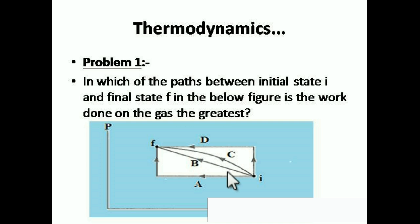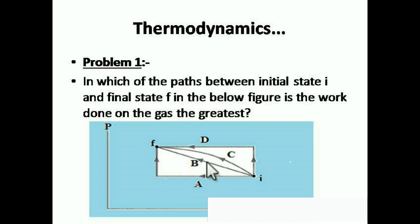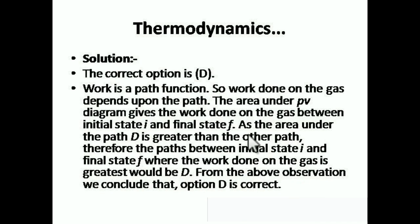Work done is a path function and changes with the path. For a PV diagram, the area under the curve gives the work done. For path A the area is least, then B, then C, and for path D the area under the curve is the highest. So work done is greatest for path D. The correct answer is D — the area under path D is greater than all other paths.